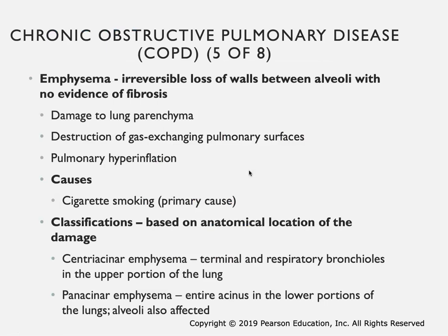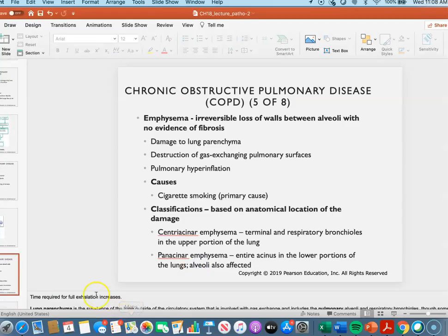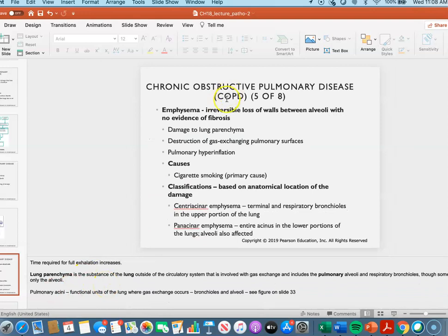Now if you talk about the emphysema part more specifically, here you're getting damage - irreversible loss of walls between the alveoli with no evidence of fibrosis. So there's just damage to those alveoli and they're completely destroyed. If the alveoli are destroyed, there's no gas exchange that's going to be able to occur. The lung parenchyma basically refers to the alveoli and the respiratory bronchioles - these are the gas exchanging structures that are affected. You also end up with hyperinflation.